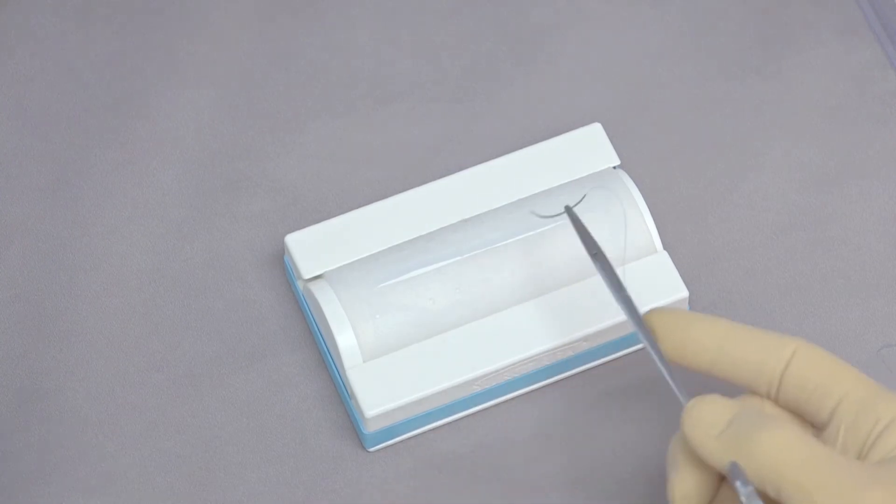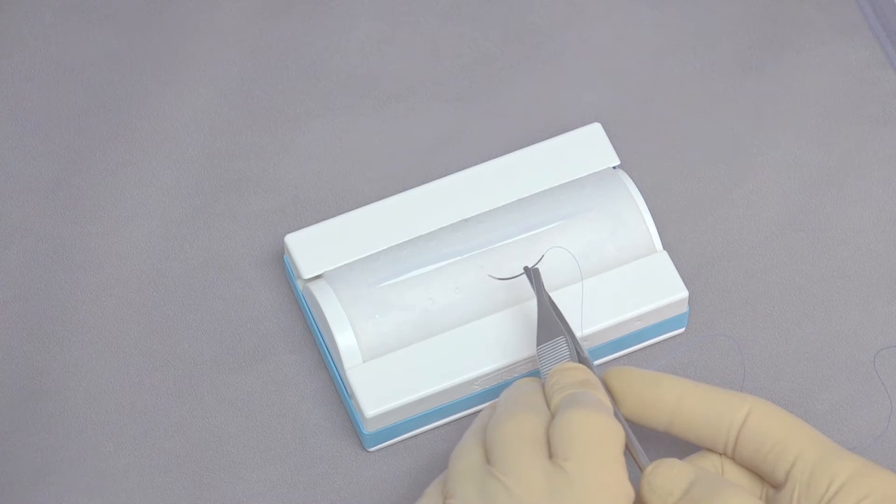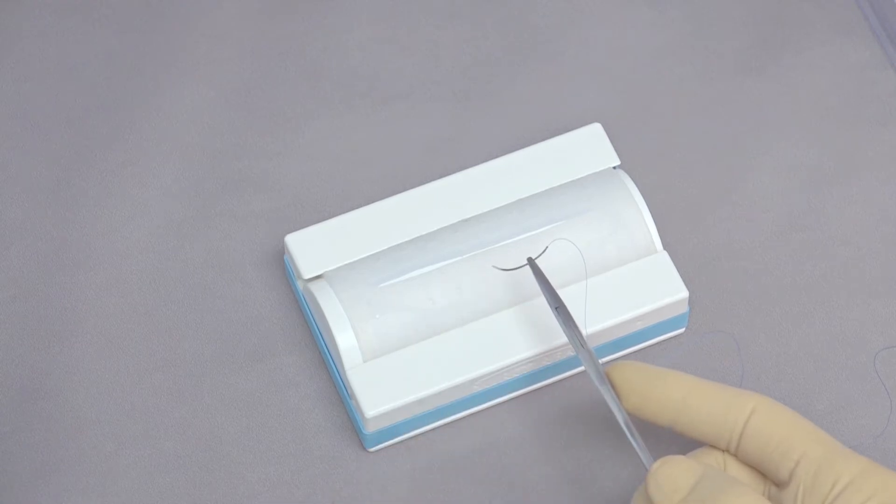To place the needle, we want to grab the needle with the needle holders just to the back of the halfway part of the needle. So you can see here the thumb forceps are about halfway, the needle holder is just past halfway.